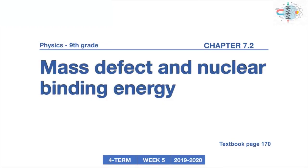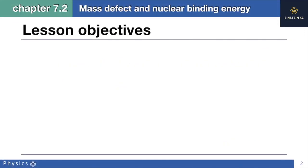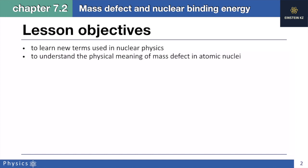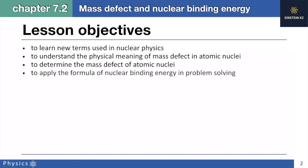Hello dear students. Today's topic is mass defect and nuclear binding energy. Before we start our lesson, let's quickly go through the lesson objectives. There are four lesson objectives. The first is to learn new terms used in nuclear physics. The second is to understand the physical meaning of mass defect in atomic nuclei. The third is to determine the mass defect of atomic nuclei.